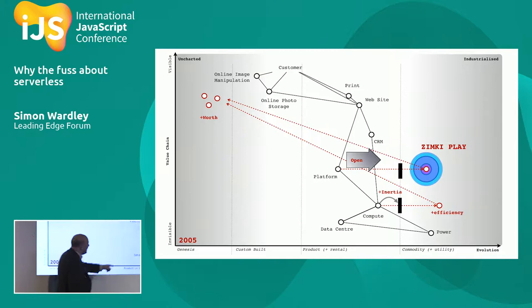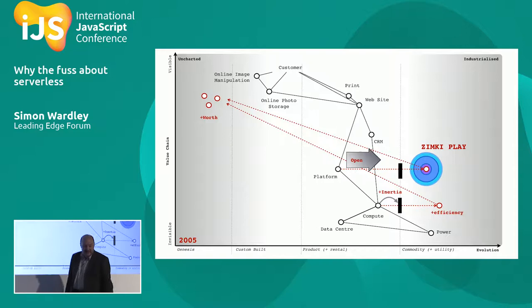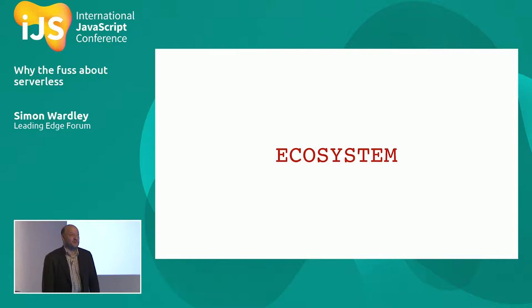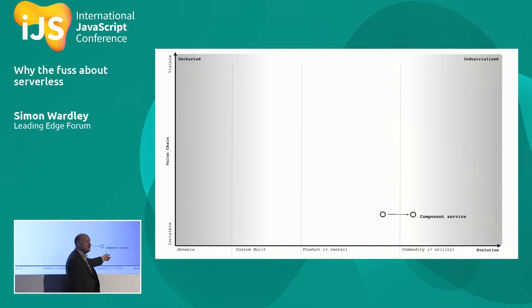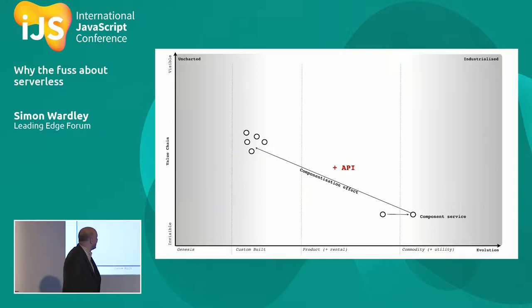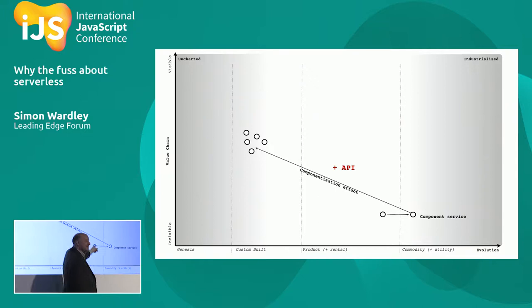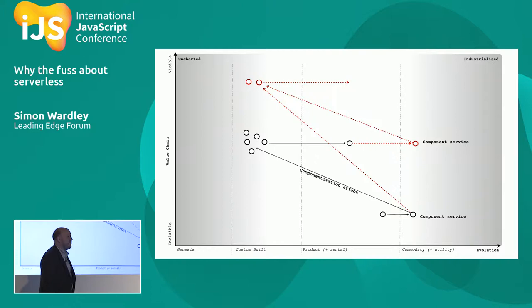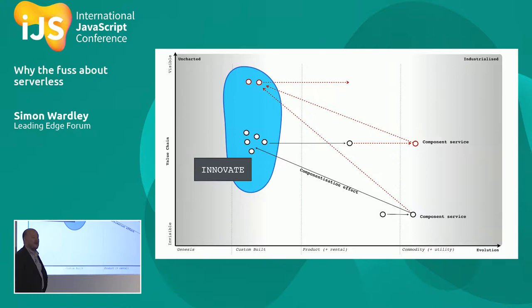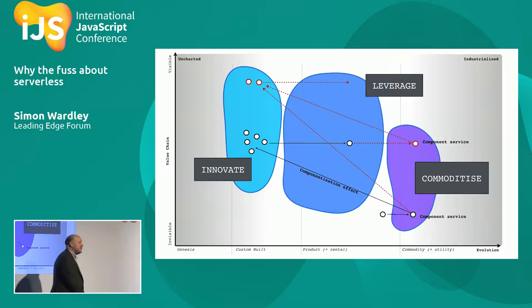Part of the Zimki play was a particular ecosystem approach. It's very simple: you find a product, turn it into a utility service, industrialize it, expose it through an API. By making it public, you hope other people build on top. Those people will build all sorts of weird and wonderful things — 99% of them will do 'kitten internet' that goes nowhere, but one or two will do something interesting like big data. From the metadata, from the consumption of your service, you can spot something interesting and commoditize it to a new component service. Then people build on top of that. You get everybody else to innovate for you, leverage metadata to spot future patterns, and commoditize to new component services.